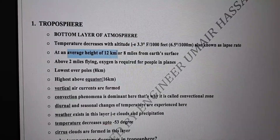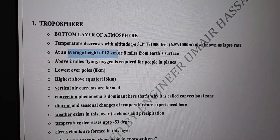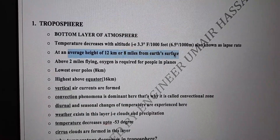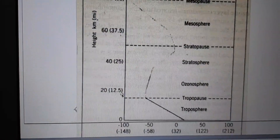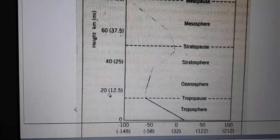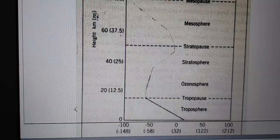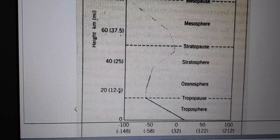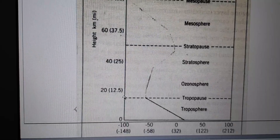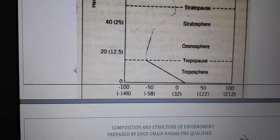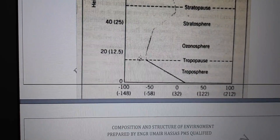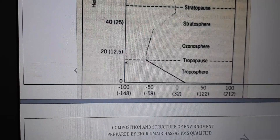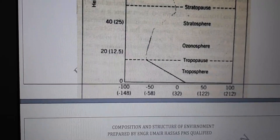This is an important point to note. The average height of this layer is 12 kilometers — that is over the equator, nearly equal to 8 miles. Looking at the diagram, the scale shown is in kilometers and miles. The 20 kilometers shown is the maximum; the average height is 12 kilometers. It is not constant — it can vary.